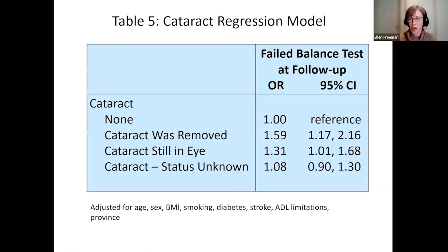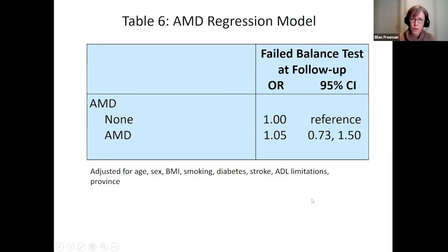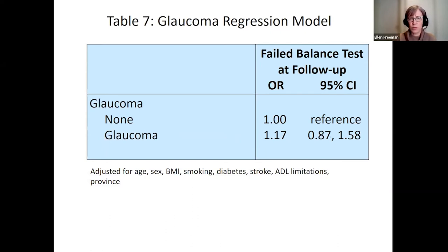When adding eye disease to the model — without acuity — results for cataract were surprising. Current cataract was associated with a higher odds of failing the balance test (OR 1.31). Unexpectedly, those who reported no current cataract — presumed to have had surgery — had the highest odds ratio. The group with unknown current cataract status showed no association. AMD showed no significant association (OR 1.05), and glaucoma was also not statistically significant.